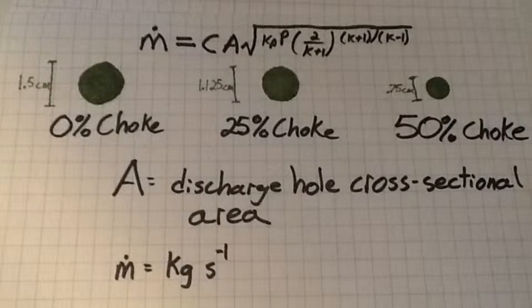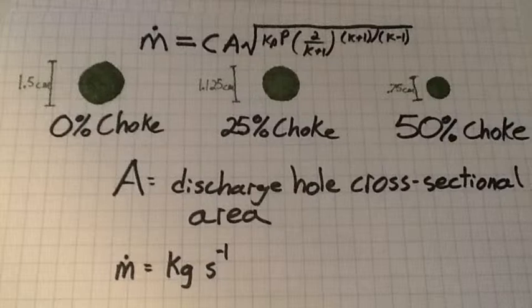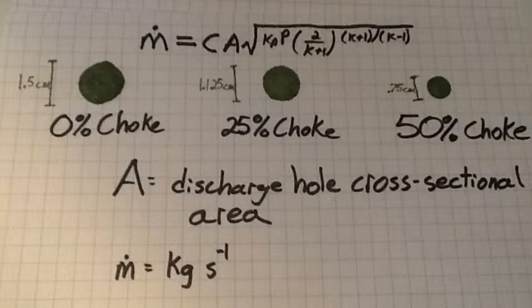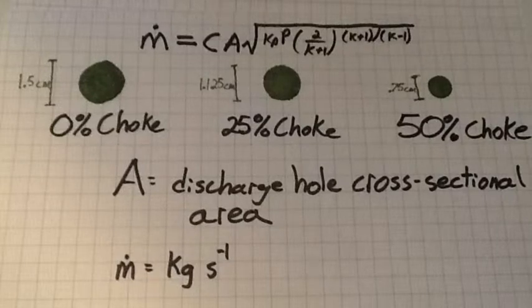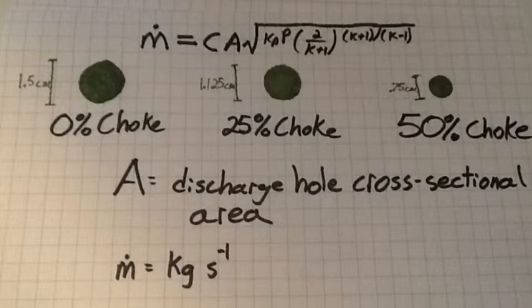To achieve 50% choke, a washer of 0.75 cm is attached to the end of the tube. As you can see, the units for mass flow rate are kg per second. This will be essential in connecting our experiment to impulse.